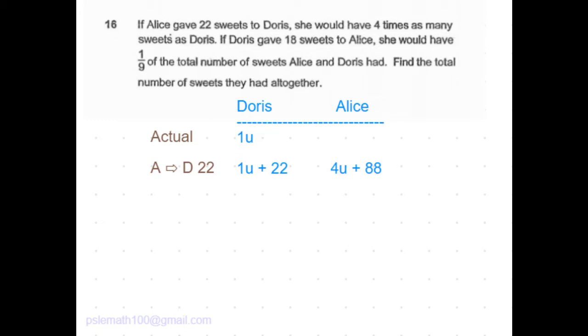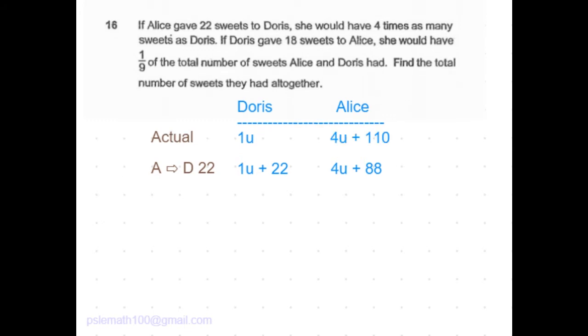This is what Alice has after giving 22 sweets. So before giving 22 sweets, she would have 4u plus 110. 88 plus 22 is 110. These are their actual number of sweets.